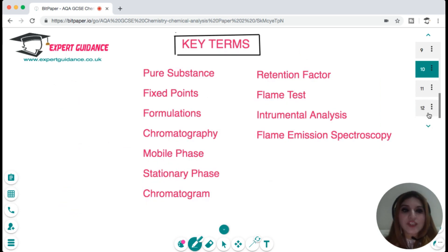I hope this topic is clear to you now. You should be able to define these terms: what is a pure substance, fixed point, formulation, chromatography, mobile phase, stationary phase, chromatogram, retention factor, flame test, instrumental analysis, and flame emission spectroscopy. If you still cannot define these terms, watch this video again, pause this video, have a go at this, and you can check back on the website for the answers.